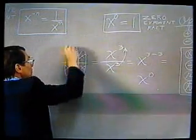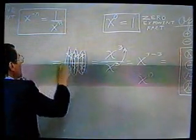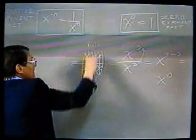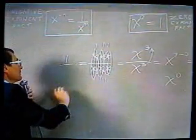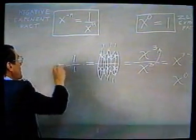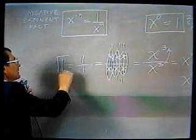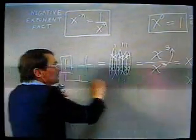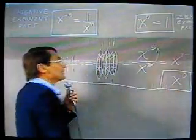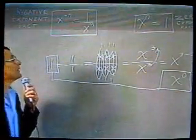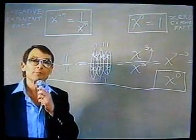And so we get one times one times one times one, which is one. All these ones need not be written, of course, but one over one is one, so we have that one is equal to x to the zero power. And so we call that the zero exponent fact, derived nicely from the quotient law.